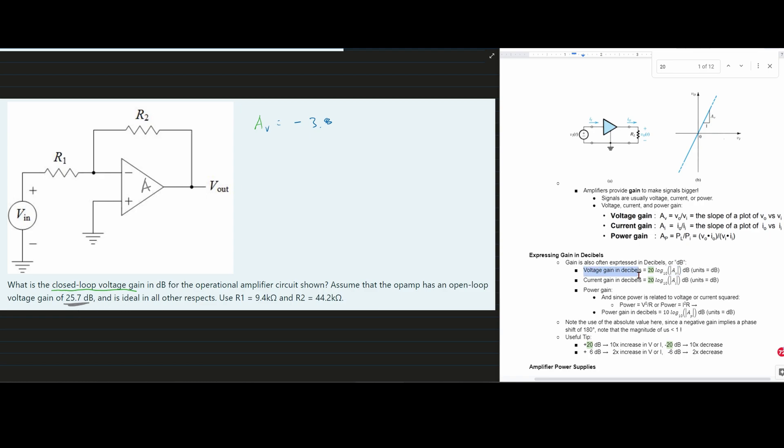And we need to find our closed loop voltage gain. And again, this is going to be everything on the left. So we're going to plug in our Av. We just found this. To the 20 log base 10.